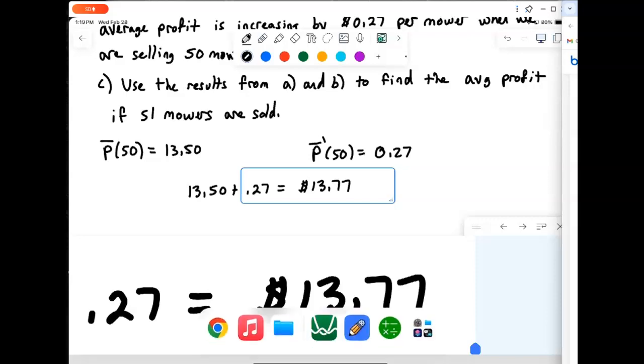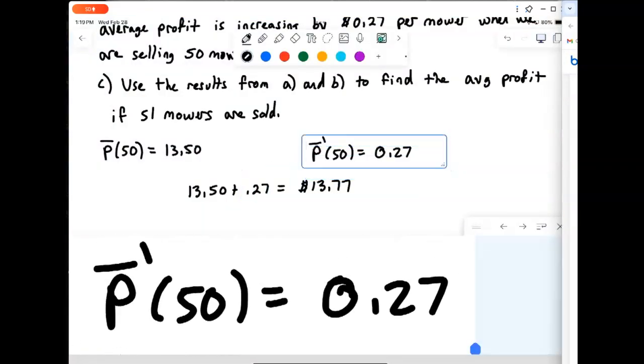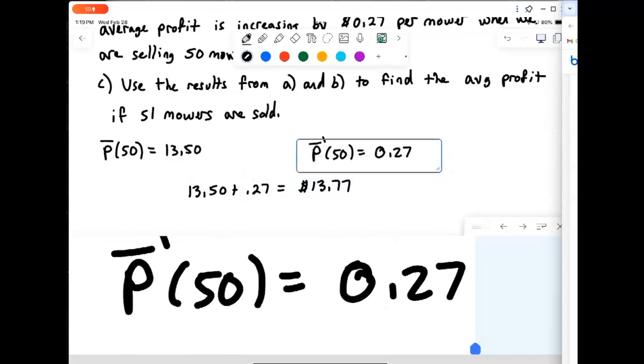Okay. Now the actual average profit at 51 mowers was $13.76, but we were really close. It was 13.764. If that four had been a five or bigger, we would have rounded up and got exactly 13.77. So again, this is because the derivative isn't quite exactly the marginal function, but it's a darn good approximation.